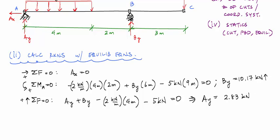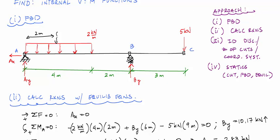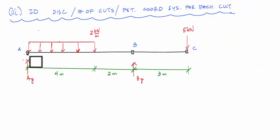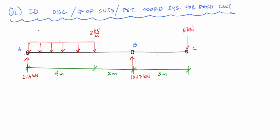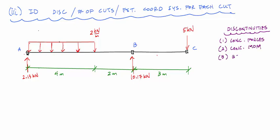Now that the reactions are calculated, I want to identify the discontinuities, the number of cuts needed, and the coordinate systems for each. I'll replace the supports with the magnitude and direction of each reaction. Discontinuities in shear and moment functions are caused by concentrated forces, concentrated moments, the beginnings and ends of distributed loads, and support reactions.